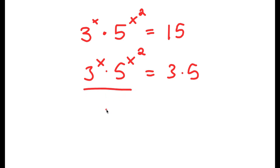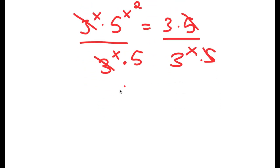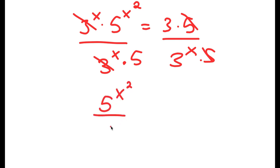Now I'm going to divide both sides by 3 to the power of x as well as 5. For my left-hand side, both the 3 to the power of x's cancel out. For my right-hand side, both the 5's cancel out. So now I get 5 to the power of x squared over 5 is equal to 3 over 3 to the power of x.